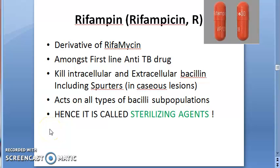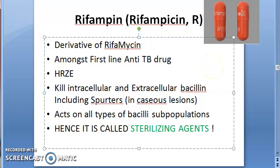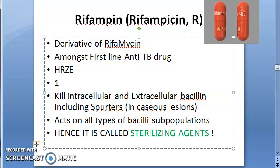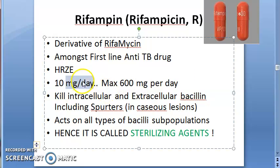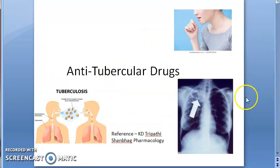Welcome. In this video we want to look at Rifampin, also called Rifampicin — it's represented as 'R'. It is the first-line anti-TB drug. In the HRZE combination given for tuberculosis patients, R stands for Rifampin. The dose is 10 mg per kg per day, maximum 600 mg per day.